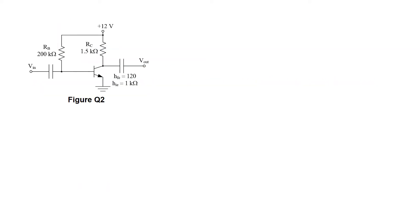Just before we draw, we actually need to go through the three steps from the first question. The first step is to replace all the capacitors in figure Q2 with short circuits. We have two capacitors here, one at the input side and the other at the output side, so we replace them with short circuits. Next, resistors RB and RC are tied to this 12-volt voltage source, so we replace the 12-volt voltage source with ground since it's a DC voltage source. Then we replace the transistor with its small signal equivalent circuit. To convert this into its H-parameter model, we will start with the transistor first.